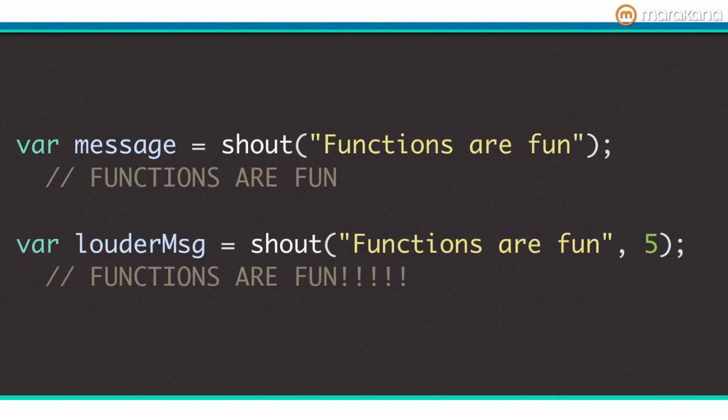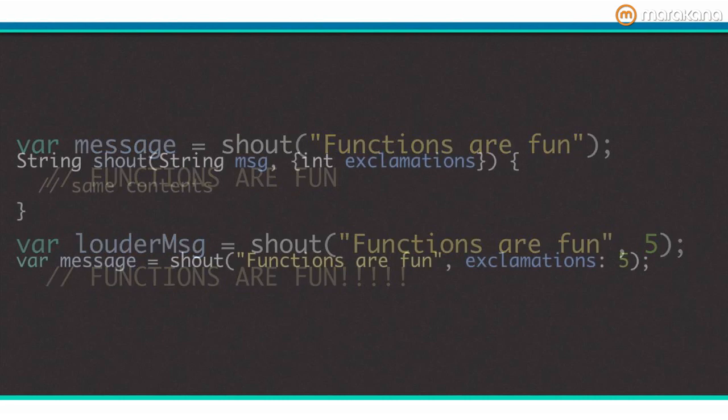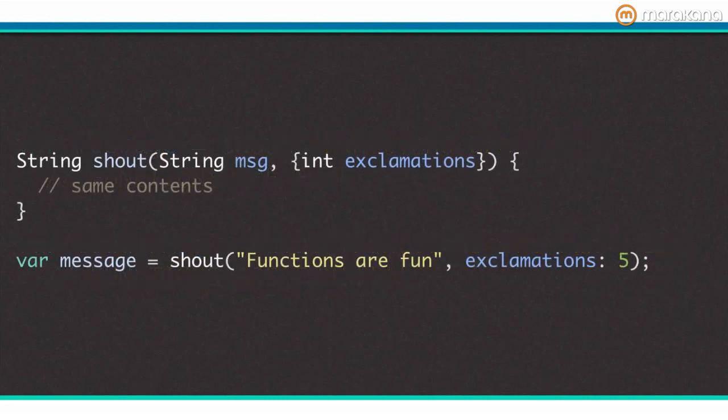Luckily, Dart has a solution for this too. You can make methods even easier to read by using optional named parameters. Here's an example. I think adding a simple name to the parameter makes it obvious what is going on. To define optional named parameters, wrap the parameters in curly braces.